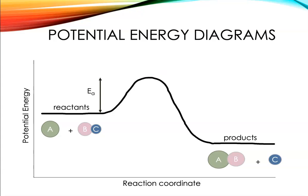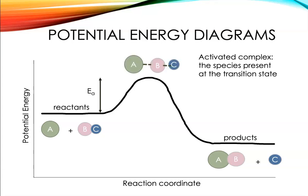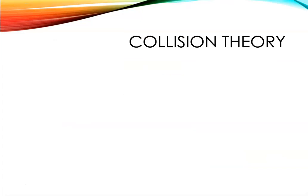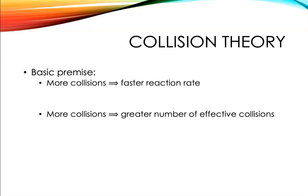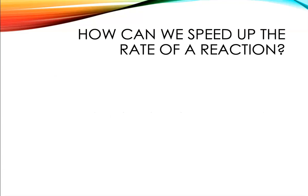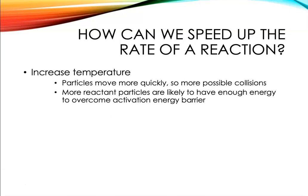At the transition state, that's where all the real chemistry is happening. The species present at the transition state is referred to as the activated complex — this is where bonds are being broken and new bonds are being formed. If you don't have enough energy to reach this state, the reaction can't occur. The basic premise of collision theory is that more collisions between reactant particles speeds up the rate. To make a reaction go faster, you could increase the temperature — particles move more quickly and more are likely to have enough kinetic energy to overcome the activation energy minimum.